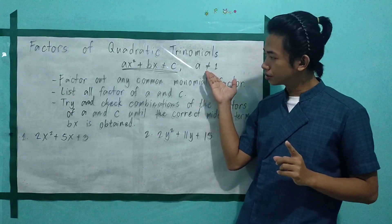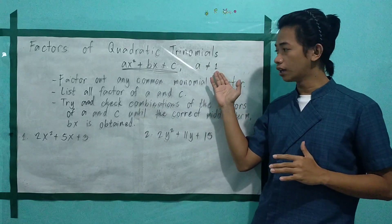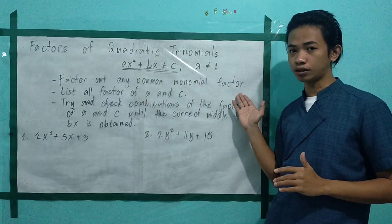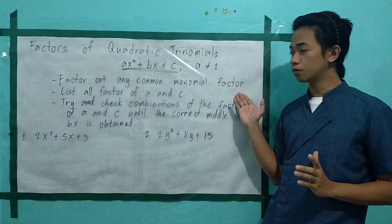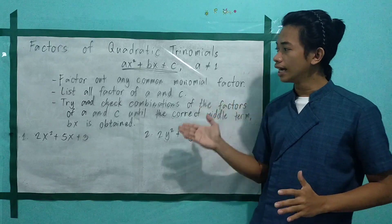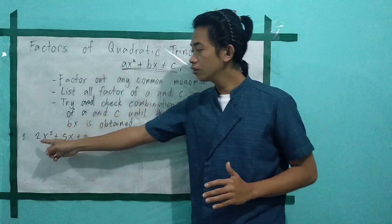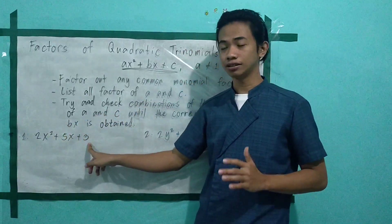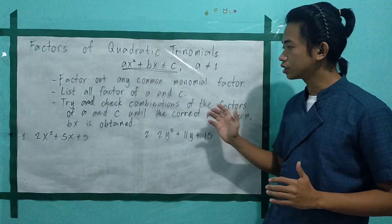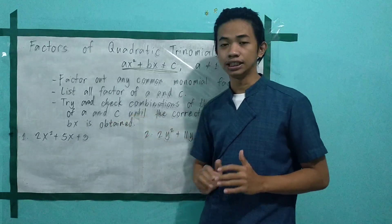There are three steps to remember in factoring quadratic trinomial where a is not equal to 1. First, factor out any common monomial factor — that is the greatest common monomial factor (GCF). Next, list all factors of a and c. Then try and check combinations of the factors of a and c until the correct middle term bx is obtained.